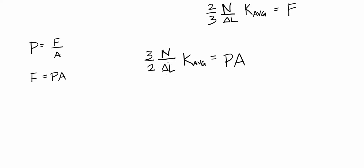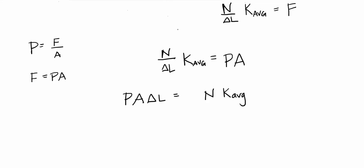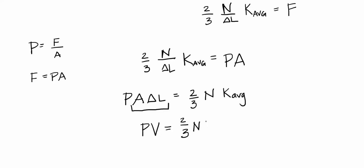We've been dragging around this ΔL. Multiplying both sides by ΔL gives P·A·ΔL = (2/3)·N·K_avg. Area times length is volume, so this becomes PV = (2/3)·N·K_avg, where N is the number of particles and K_avg is the average kinetic energy — not exactly the kinetic energy of any one particle, but the average.